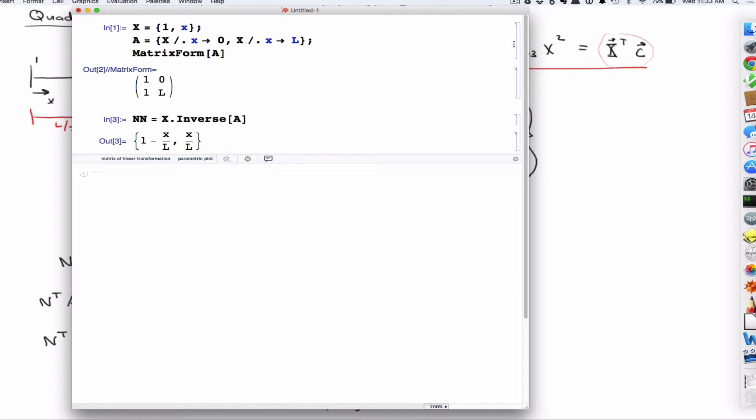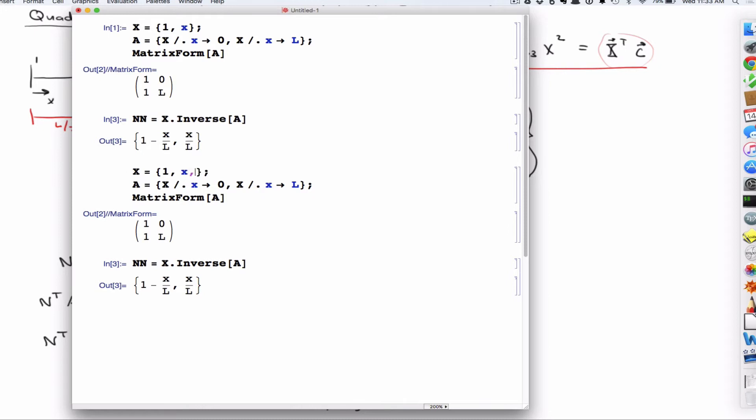So if I just copy everything, and then we just have to add an x squared term here. And so now, if it's quadratic, the second node is at L over 2. So we're going to evaluate this at L over 2. And then the third node is at L, is at x evaluated at L.